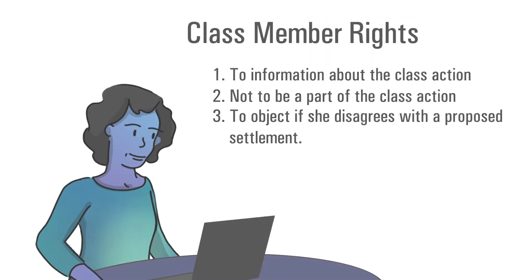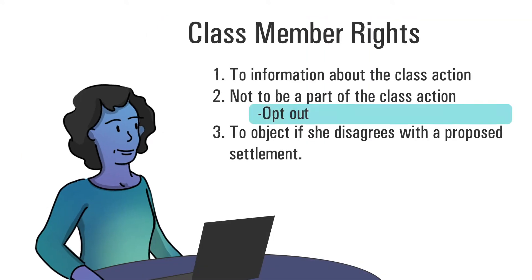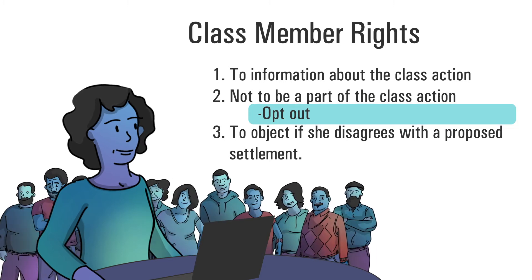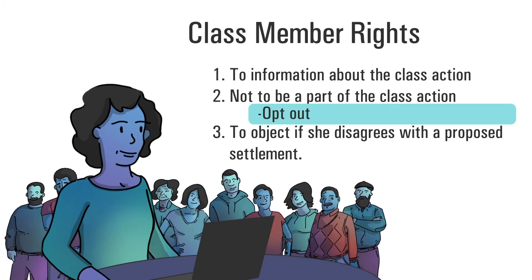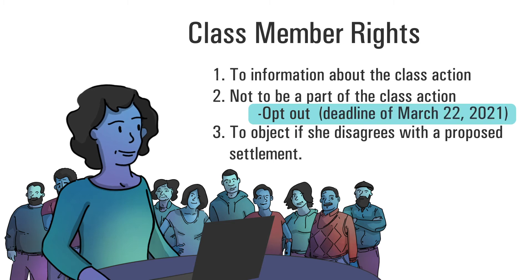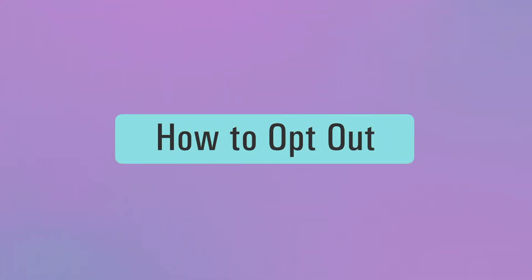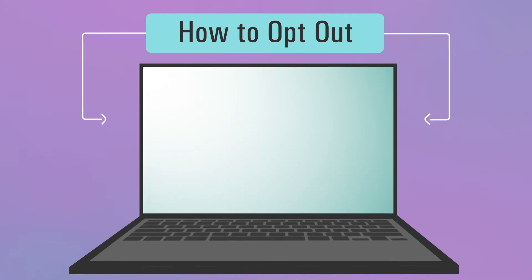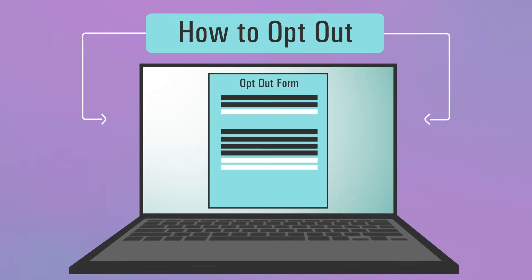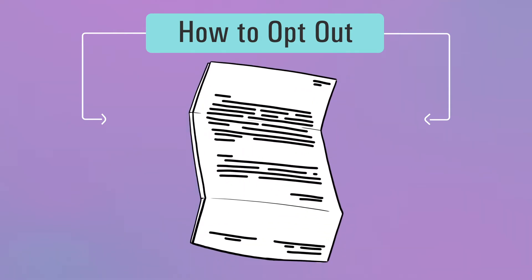If Anita does not want to be part of the class action, she must opt out. If she wants to be in the class action, she does not need to do anything. If Anita wants to opt out of the lawsuit, she must do it before the deadline listed in the official court notice. Anita can opt out in two ways. One, usually there is an opt-out form available on the website set up for the class action, to be filled out and sent to class counsel. Or two, she can send a letter to class counsel stating that she wishes to opt out.